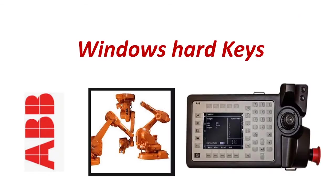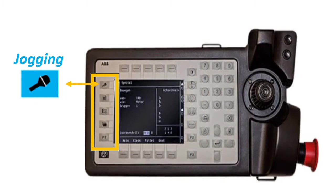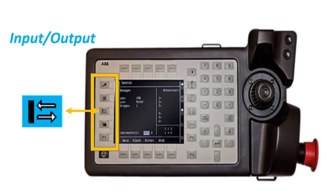Our next topic is Windows Hard Keys. Jogging: press this key to jog the robot. Program: press this key to access programming and testing the program. Inputs and Outputs: press this key to manually operate the input and output.